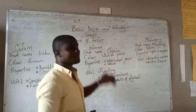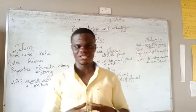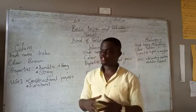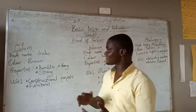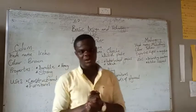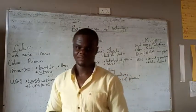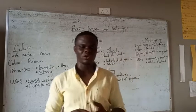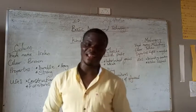We are going to cover kinds of timba. Now we have different kinds of timba, but at your level we are going to do the three main ones: udum, guawa, and mahogani. In this section we are going to talk about their trade names, their uses, their properties, and their color.